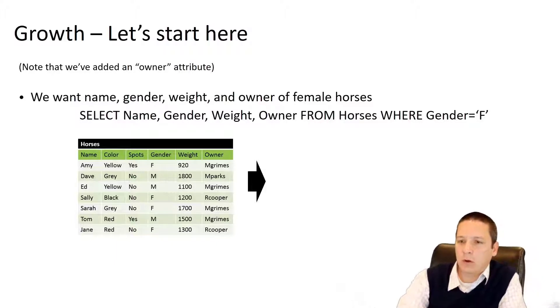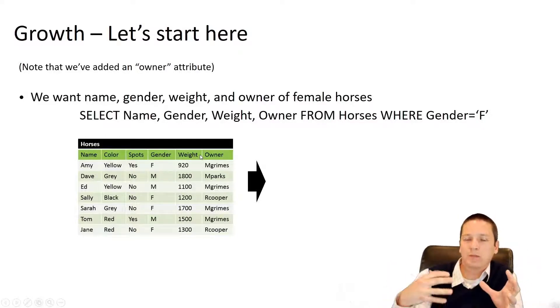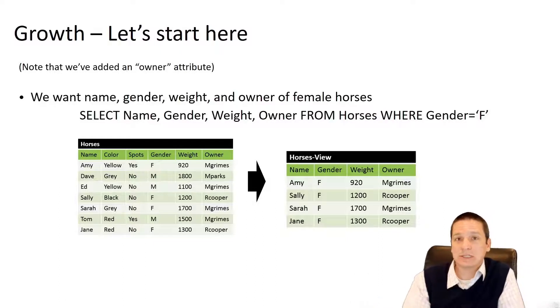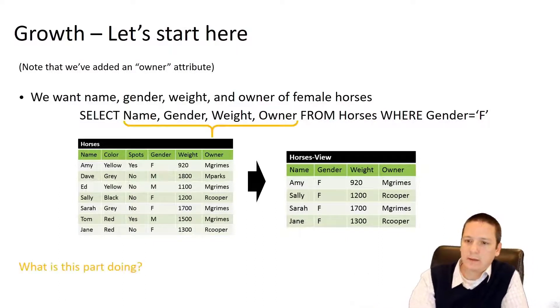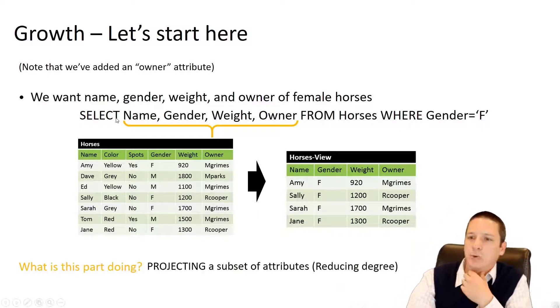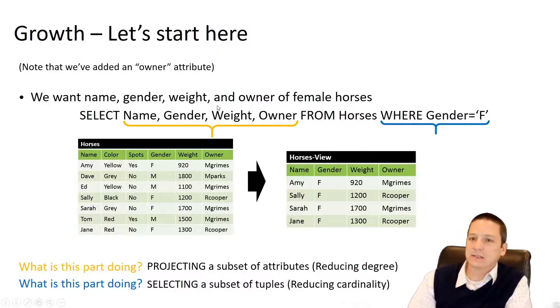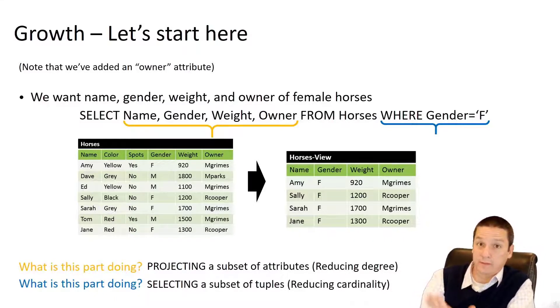We're going to look at growth of our data and restructuring. Going back to our horse relation here, which originally had the attributes name, color, spots, gender, and weight, but now we've grown this relation. We've added another attribute called owner. Our view is unaffected. We're still just selecting tuples where the gender is female and projecting these same attributes. Even though we added a new attribute to this source relation, our view is unaffected. It didn't impact this application that just needs to see female horses.